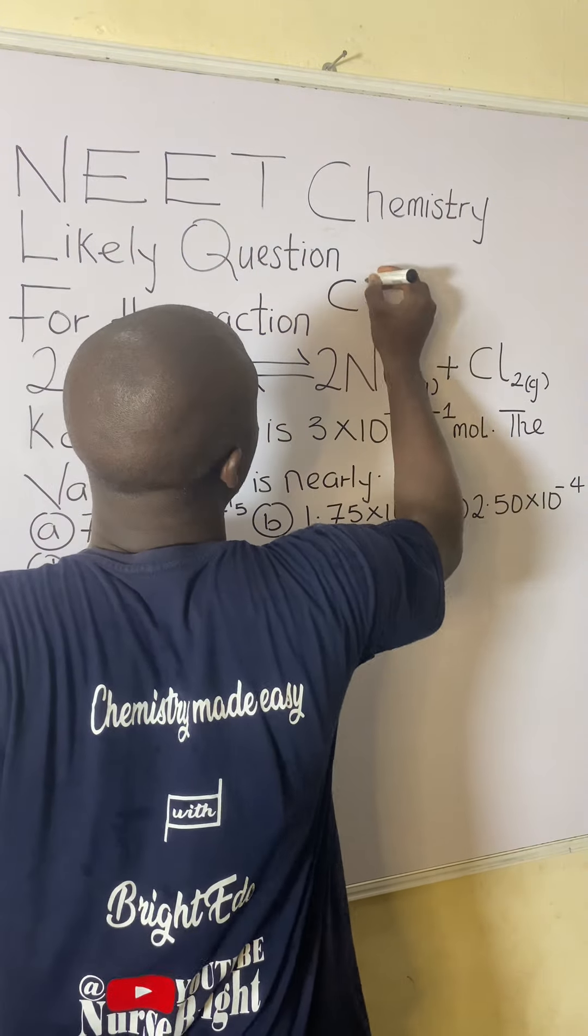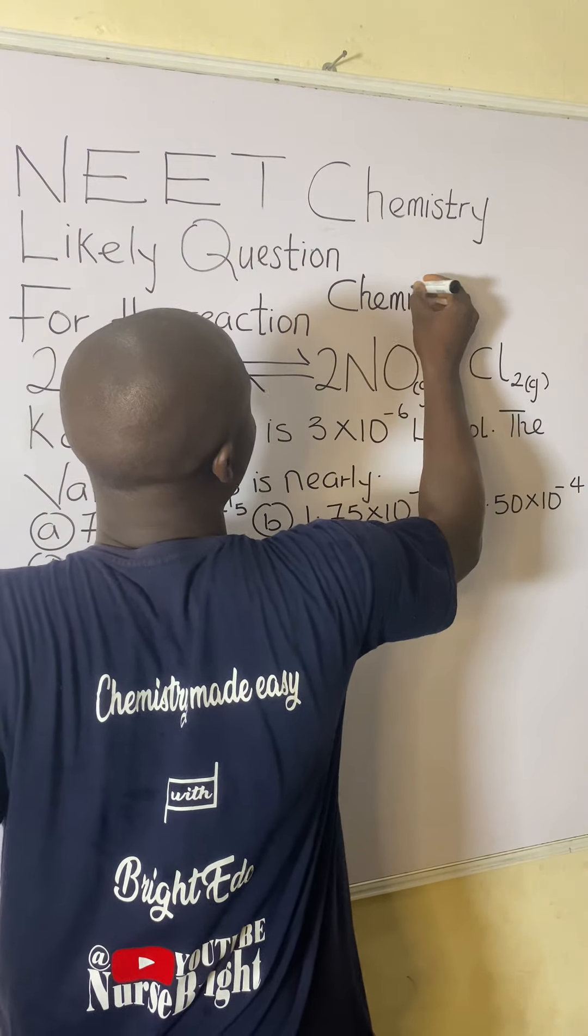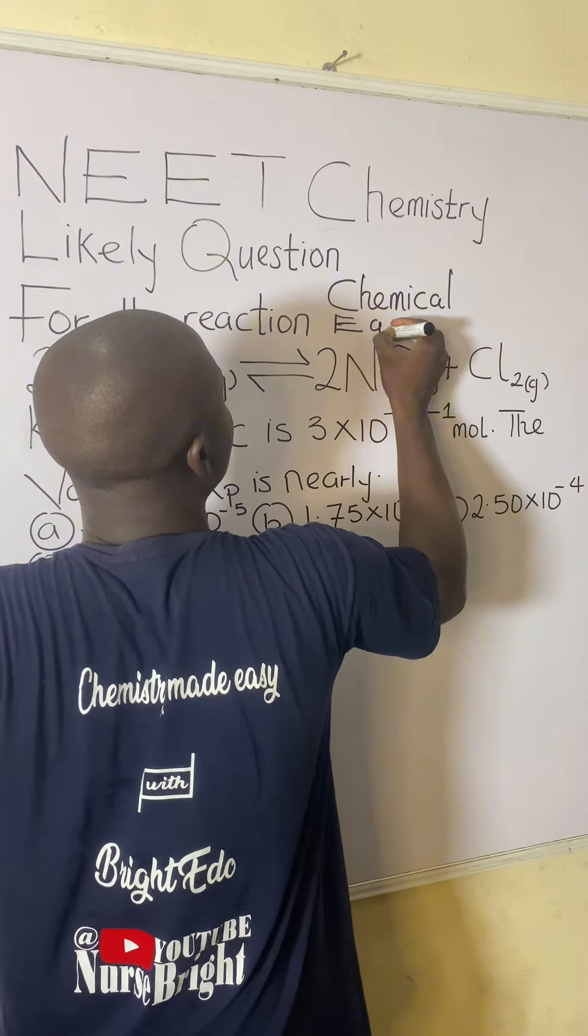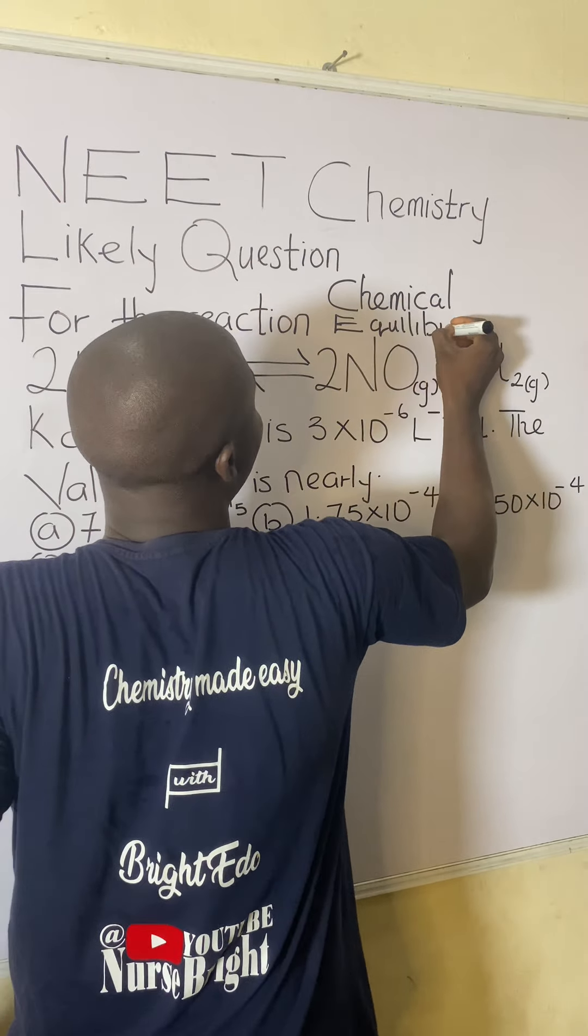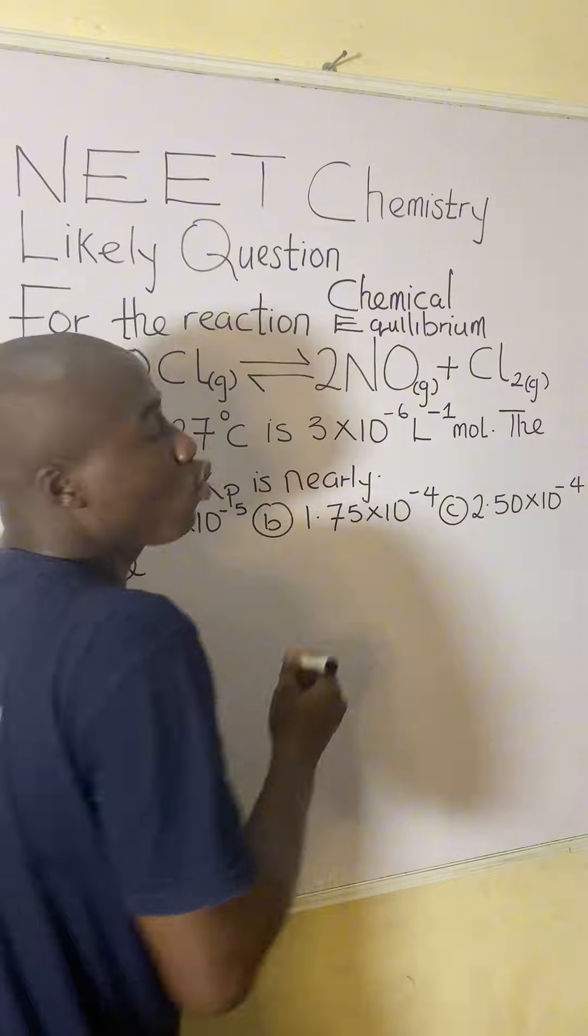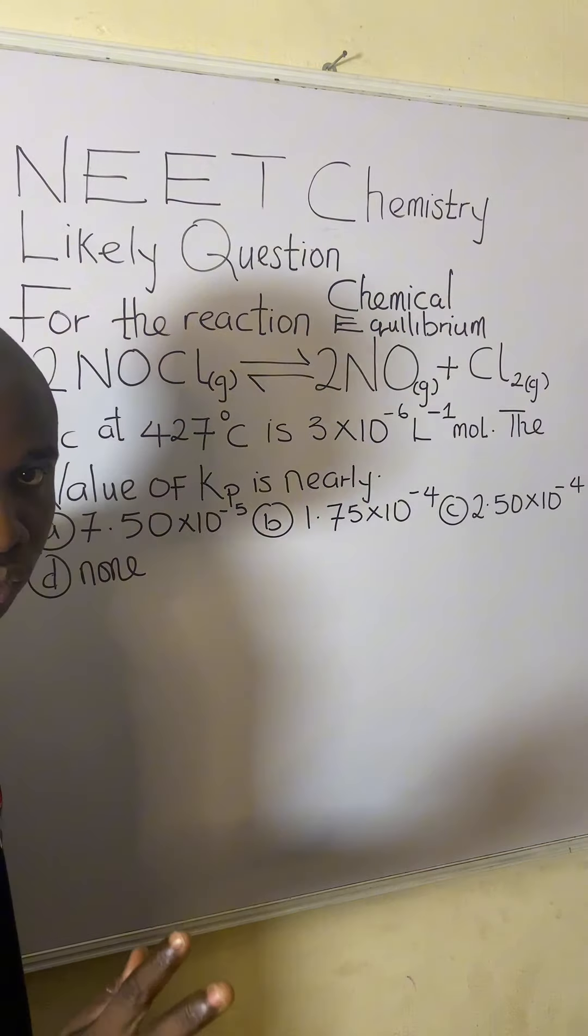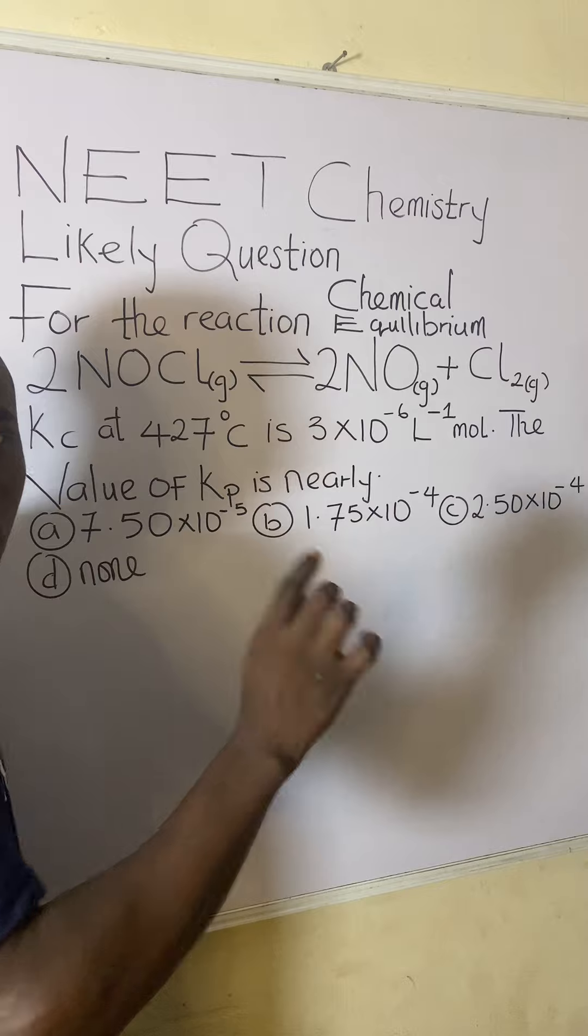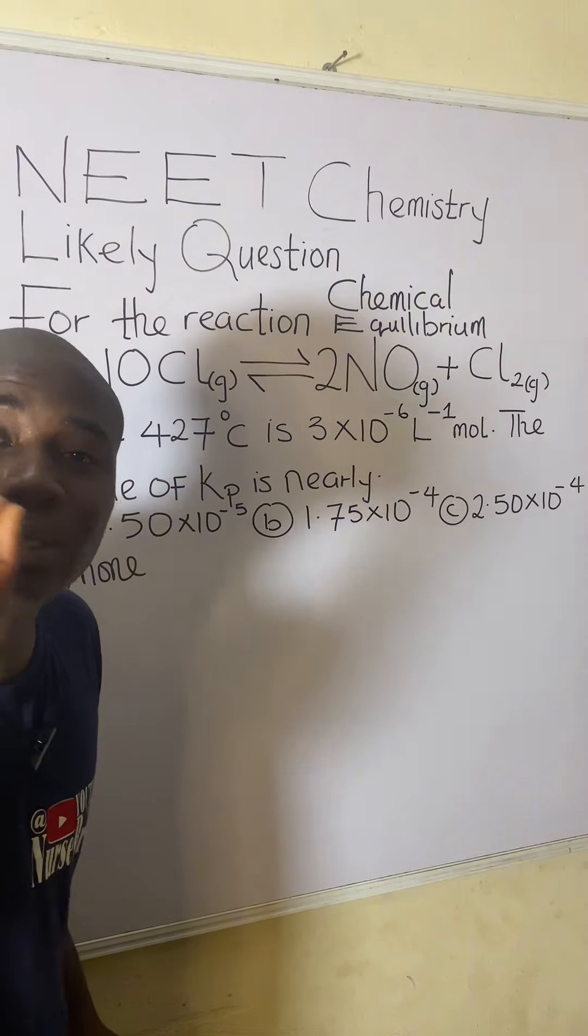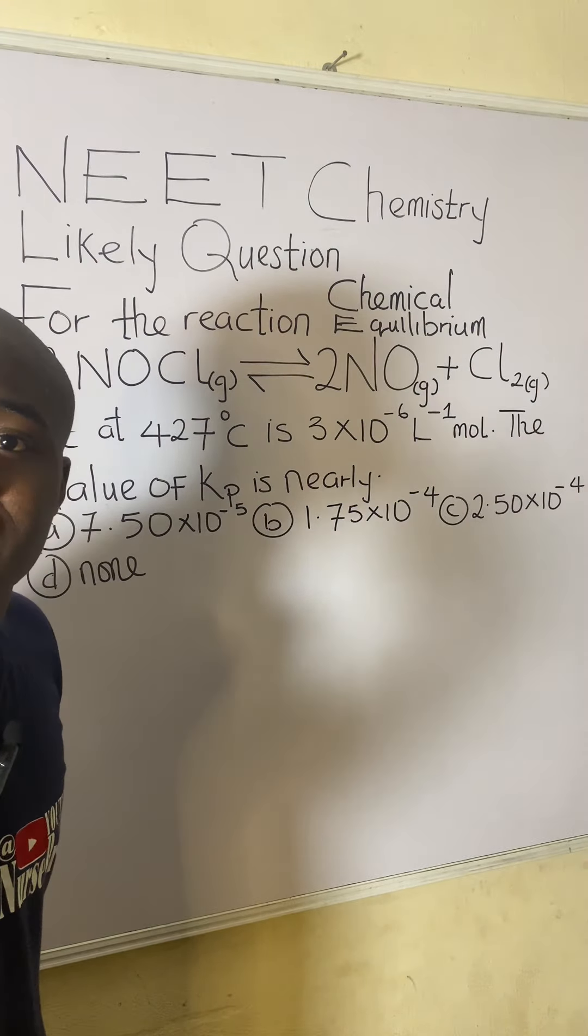So solving this question, I have to solve it carefully because it's actually very easy. So this question is from the topic in chemistry called chemical equilibrium. So how do we solve it? Here is a reaction given to us. And this reaction is at equilibrium. How did I know that this reaction is at equilibrium?